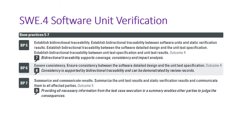BP5 talks about establishing bi-directional traceability. We need to ensure traceability between the software units and the software verification results — from software units to code review comments, and from software units to static analysis errors and warnings. Bi-directional traceability must also be established between the software detailed design and the software unit specification, and each test case must be traceable to the software detailed design.